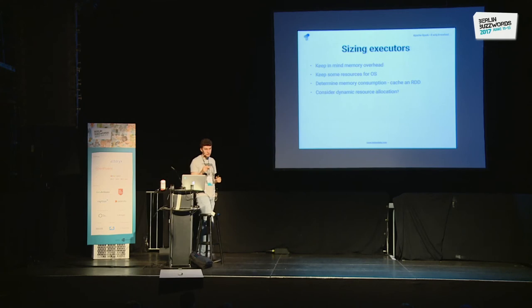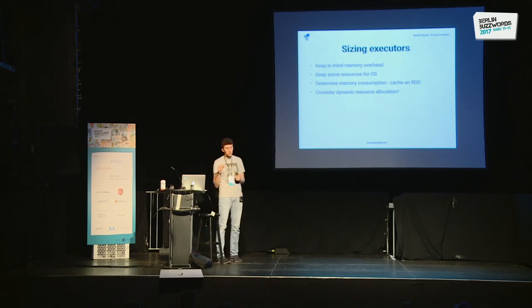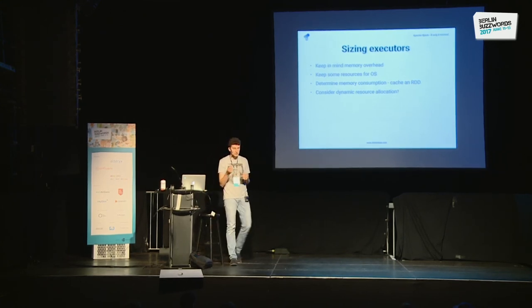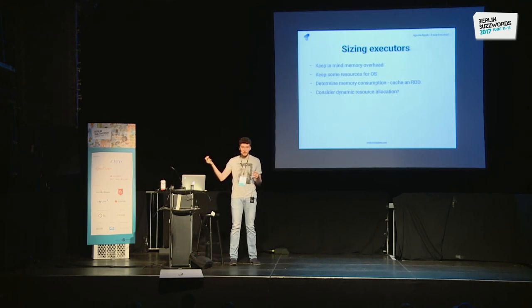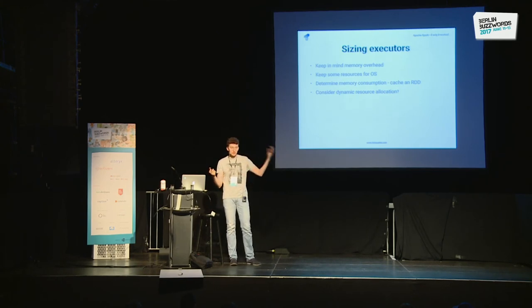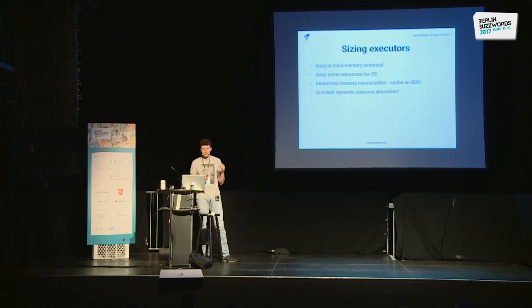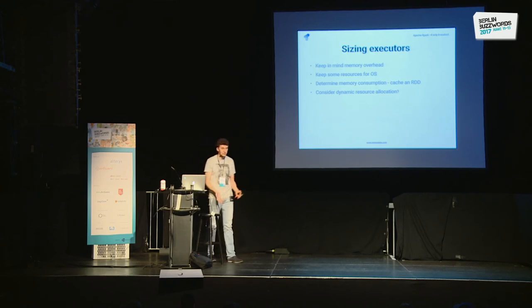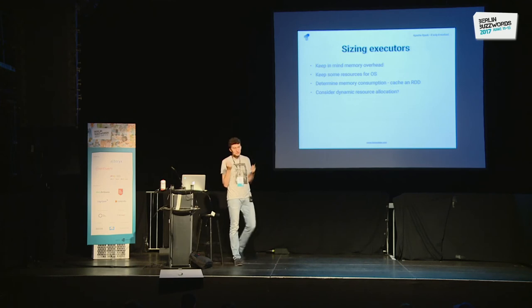If you're not sure about memory consumption, you can always cache an RDD and check how much it takes to get an overview of what you're dealing with. If you're not sure how many executors you want or how many resources to give, and your job sometimes takes small input and sometimes very large input, you can use dynamic resource allocation. Spark will start with a small number of executors and bump it up while it sees pending tasks.